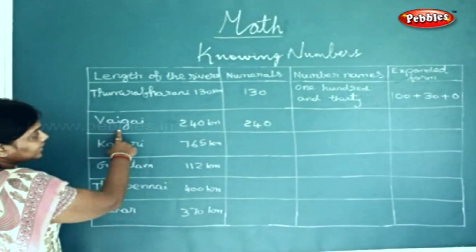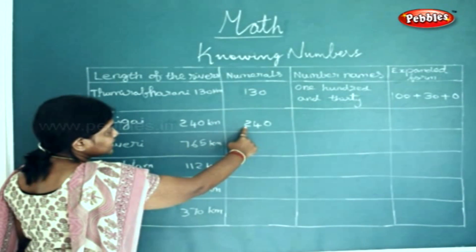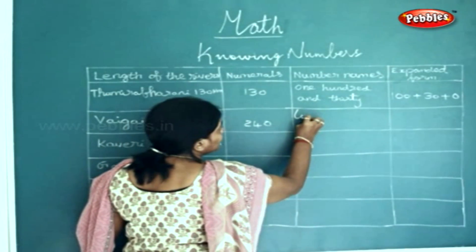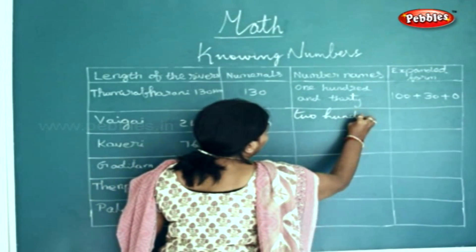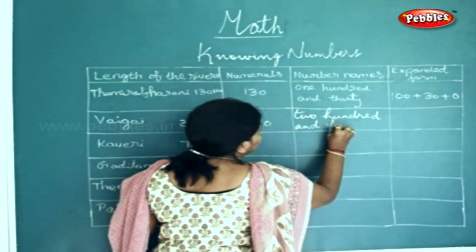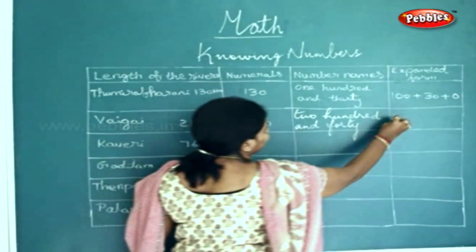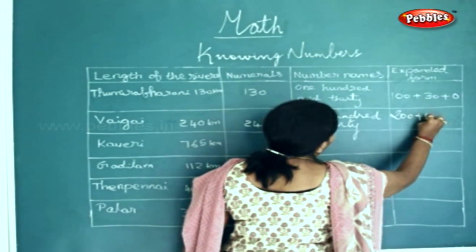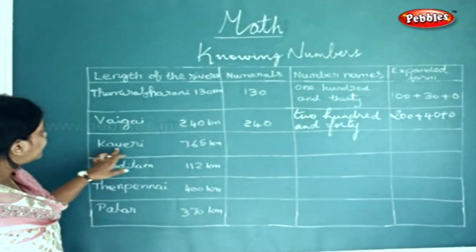The next one is Vaigai, 240 kilometers. In numerals we will write it as 240. In number names we will write it as two hundred and forty. In expanded form we will write it as 200 plus 40 plus 0.